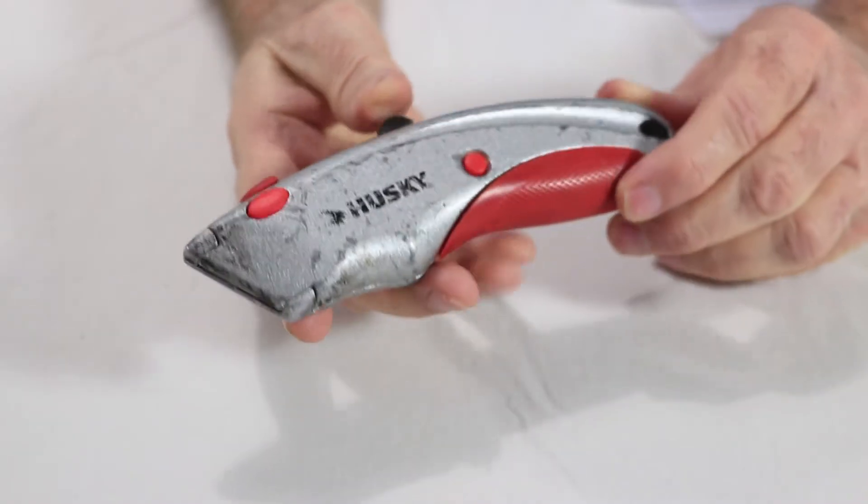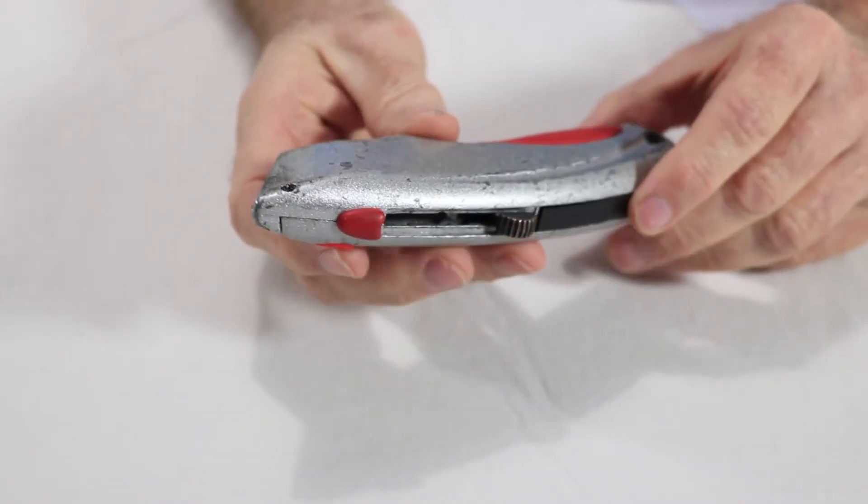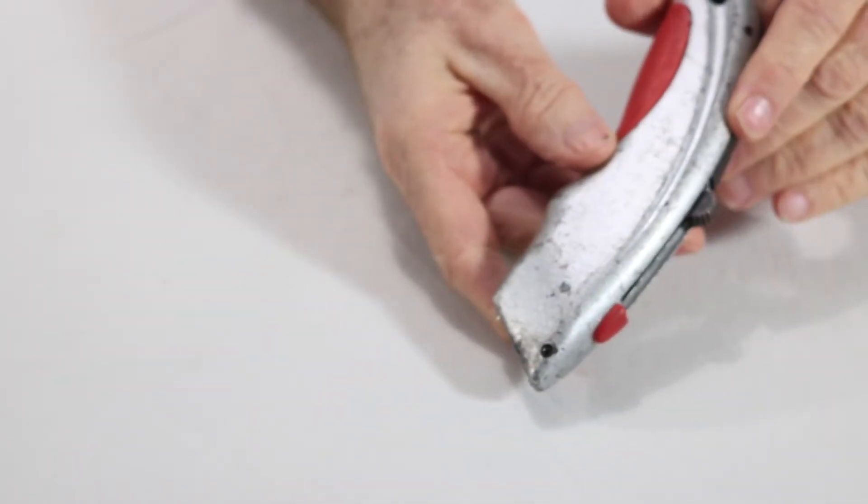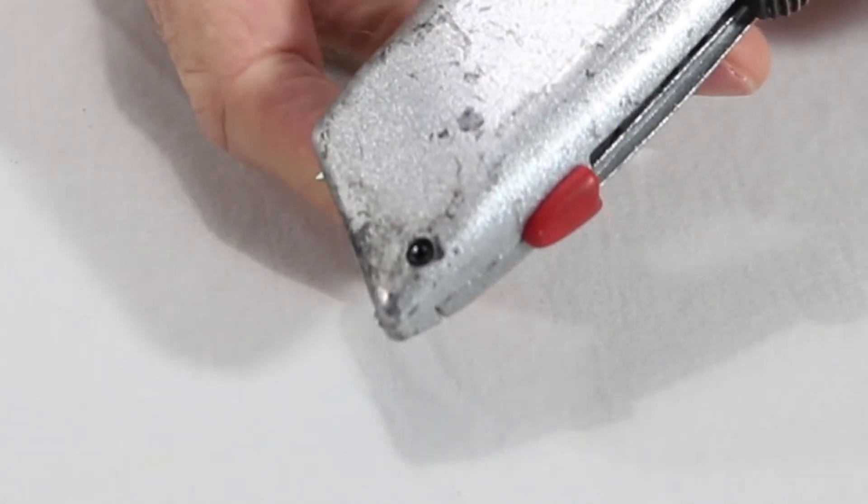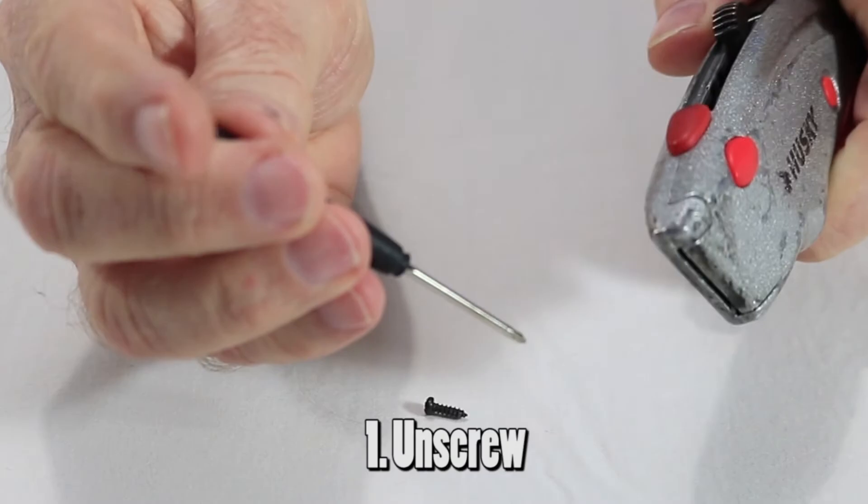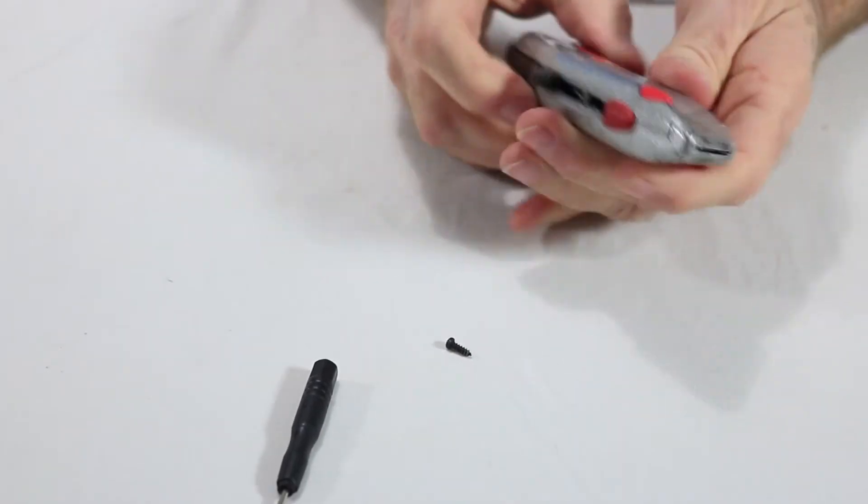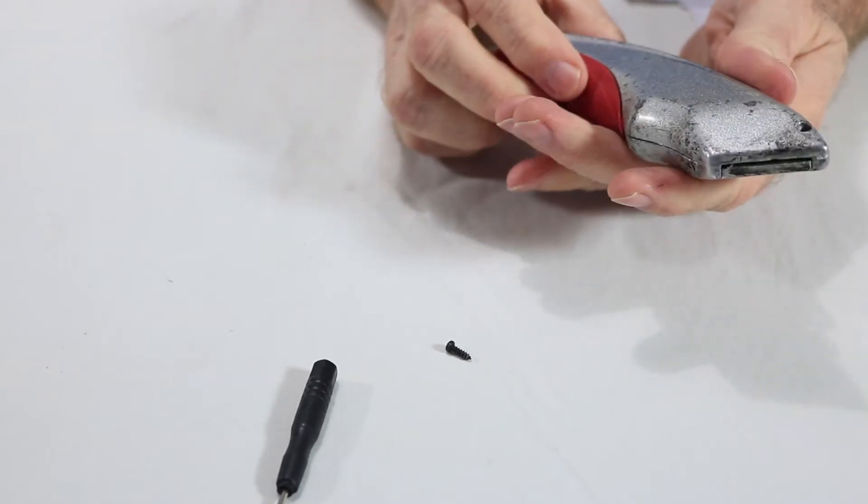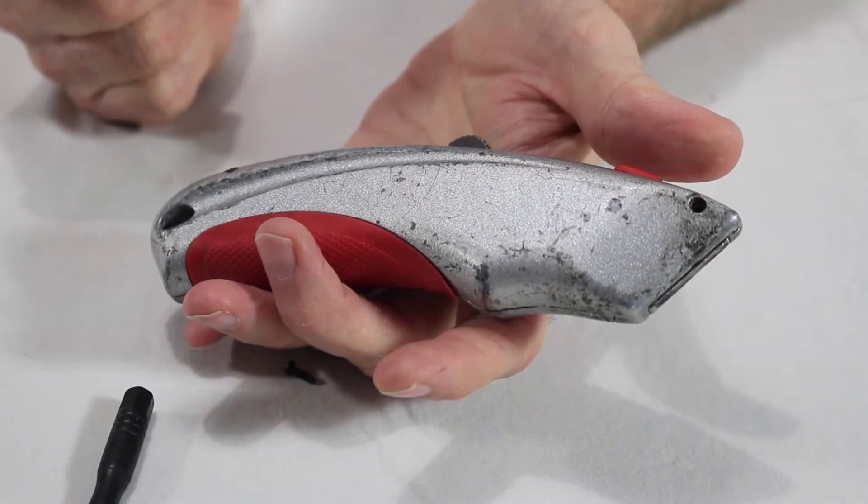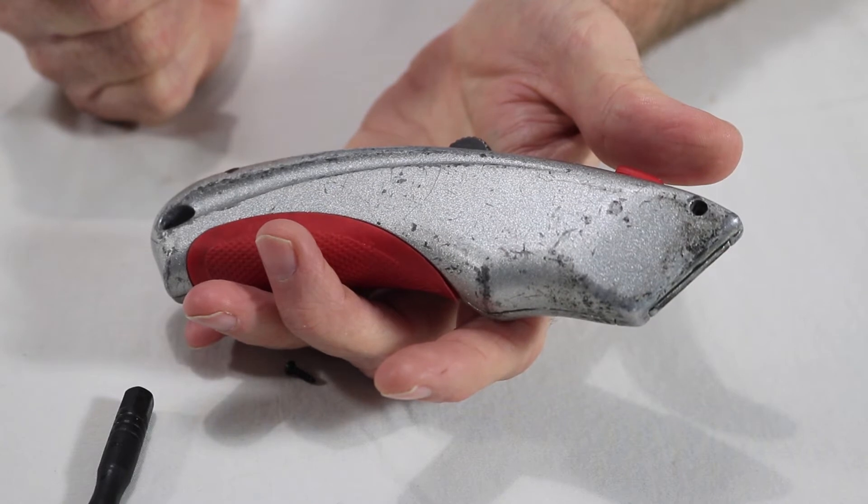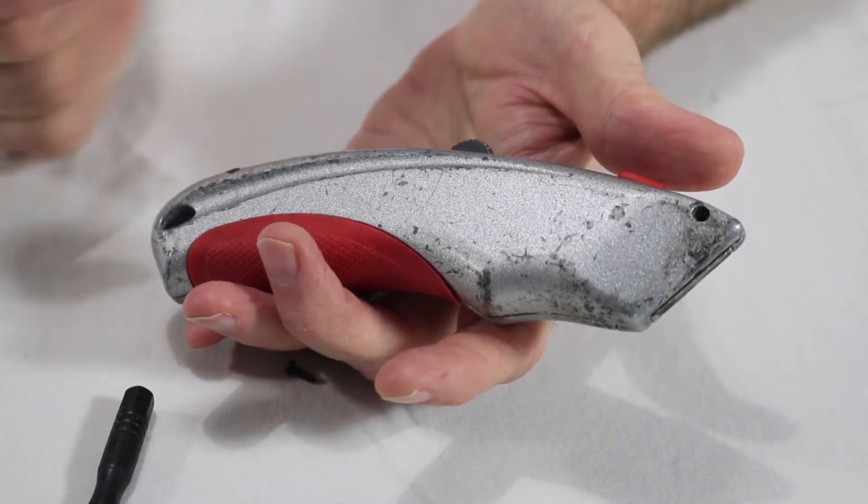Peering around the knife there's no obvious way to take it apart. Hmm, there's a tiny screw here. Maybe that'll do it. Well that didn't work.